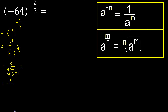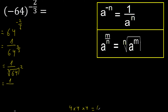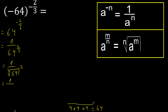3 equal numbers that multiply to 64. 3 equal numbers: 4 x 4 = 16, 16 x 4 = 64. Ok, equal — therefore this is 4.